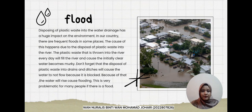The disposal of plastic waste into water drainage has a huge impact on the environment. In our country, there are frequent floods in some places, caused by the disposal of plastic waste into rivers. Plastic waste thrown into the river every day causes the initially clear water to become murky. Disposal of plastic waste into drains and ditches blocks water flow, causing water to rise and result in flooding — which is very problematic for many people. That's all from us. Thank you.